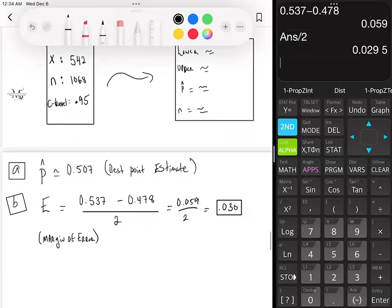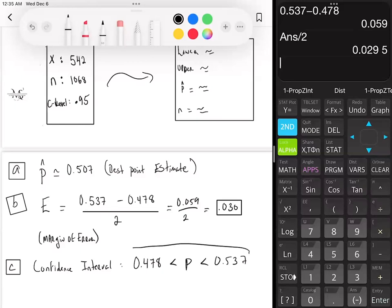Now in part C, you just got to write out the confidence interval. So the confidence interval is going to be the lower bound less than the population's proportion less than the upper bound. So your lower bound would have been 0.478 is less than P, less than 0.537. And that would be your solution so far to parts A, B, and C.